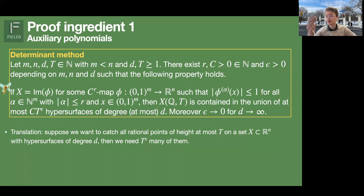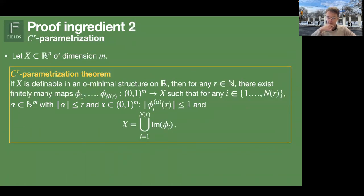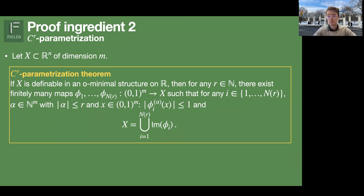There is an extra condition: the theorem requires X to be the image of some C^r map φ, where r is given by the statement. You need X to be the image of a sufficiently smooth map for the method to work. This is exactly where O-minimality enters: O-minimality gives this for free. More precisely, you get a C^r parametrization theorem — if X is definable in an O-minimal structure, then it is a finite union of images of such maps. This C^r parametrization theorem is the main ingredient and takes most of the space in the Pila-Wilkie paper.